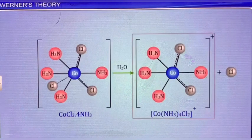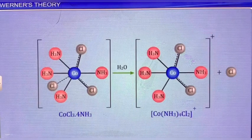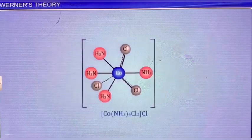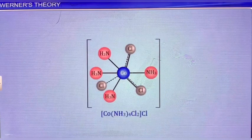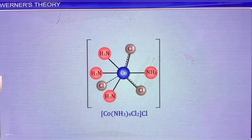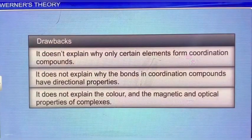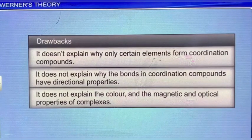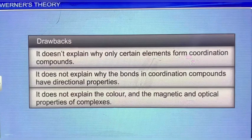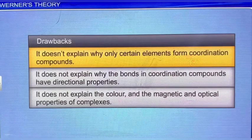Although Werner's theory successfully explains the bonding features in coordination compounds, it suffers from some drawbacks. It doesn't explain why only certain elements form coordination compounds. It does not explain why the bonds in coordination compounds have directional properties. It does not explain the color and the magnetic and optical properties of complexes.